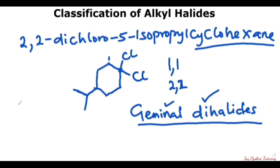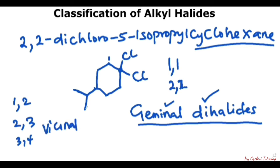When you have the halogens on adjacent carbons to each other, then it is called a vicinal dihalide. So that is how you classify things like this.